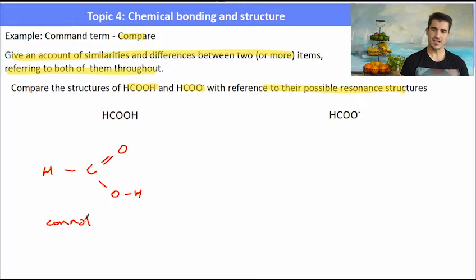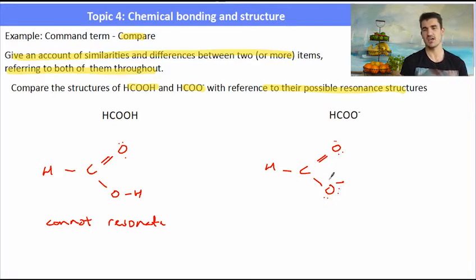The methanoic acid with its OH cannot resonate. There's no places for the electrons in the double bond to move around. But in the methanoate ion there is the possibility of a resonance occurring. The oxygen that has the negative charge has taken the electrons from the hydrogen, so it has an extra pair of electrons. One of those pairs could go into the single bond to make a double covalent bond, leaving a single bond on the other oxygen.